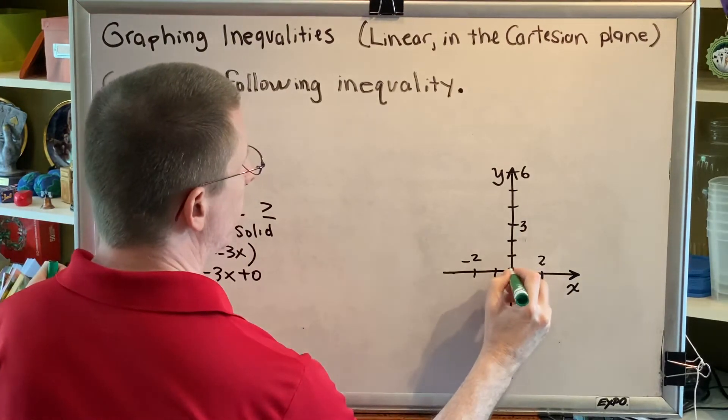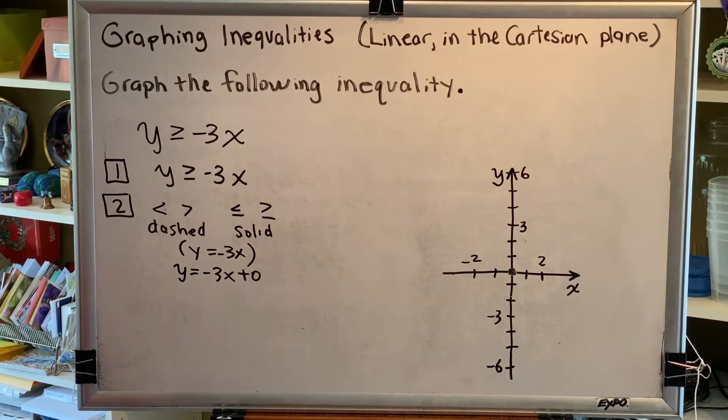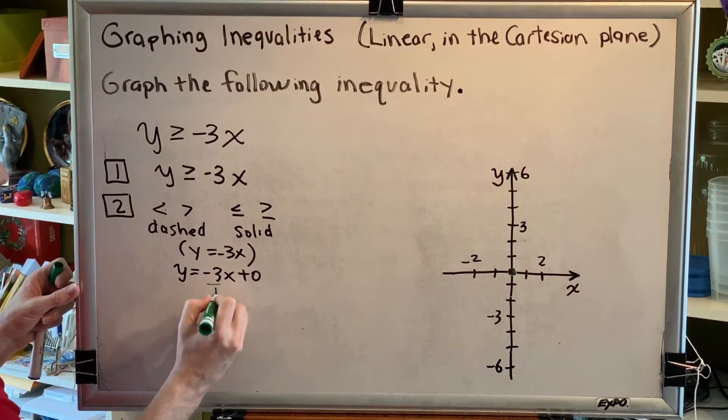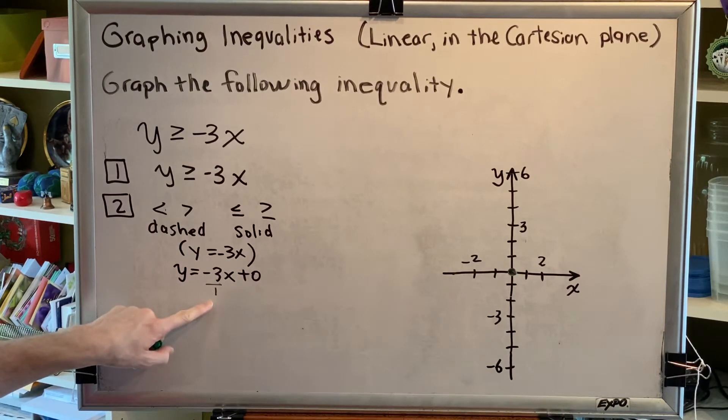So we'll plot the origin, and then from there, we can rise and run using our slope to find other points on the line. Negative 3 is the same thing as negative 3 over 1. So we rise negative 3 and run 1.